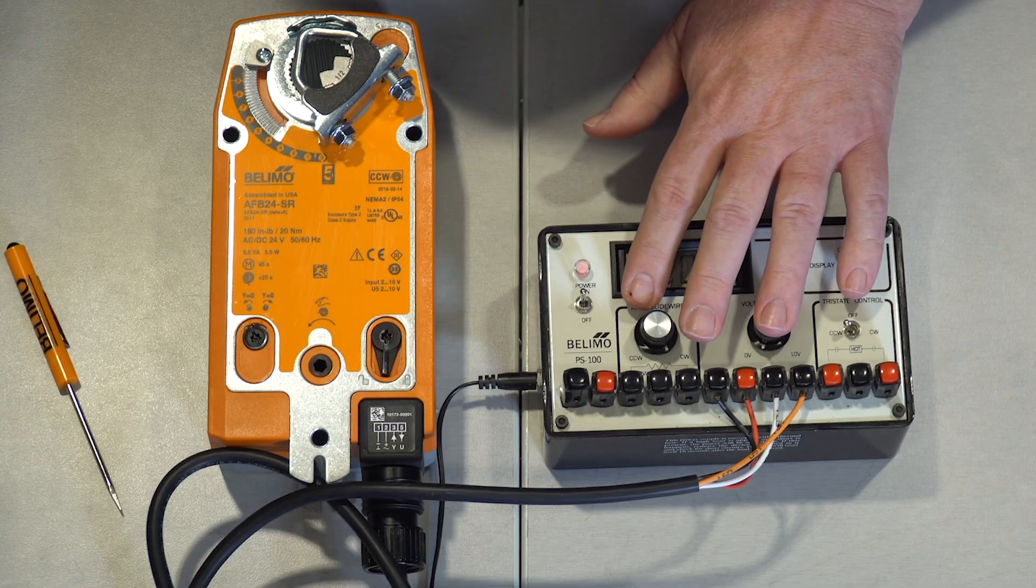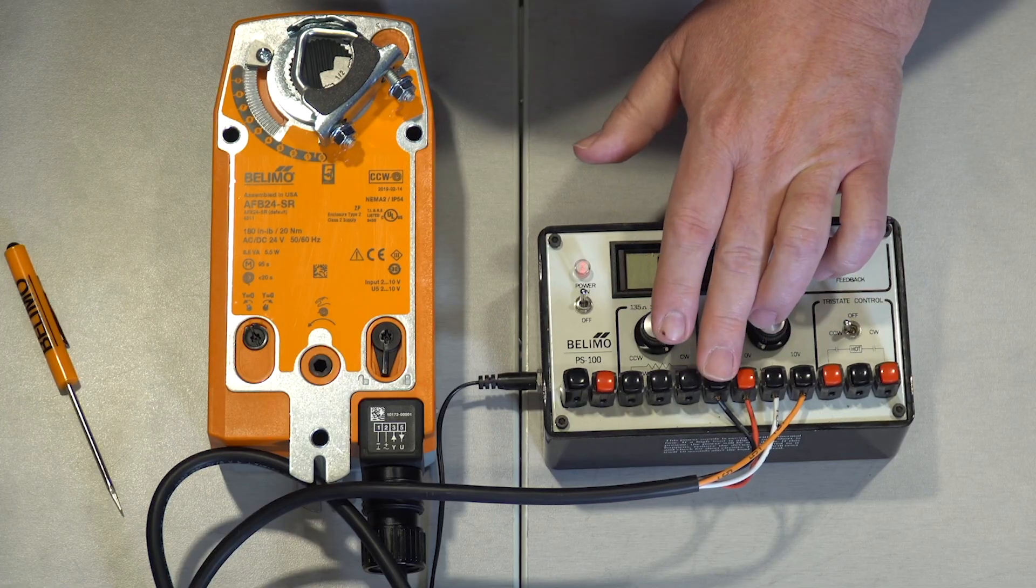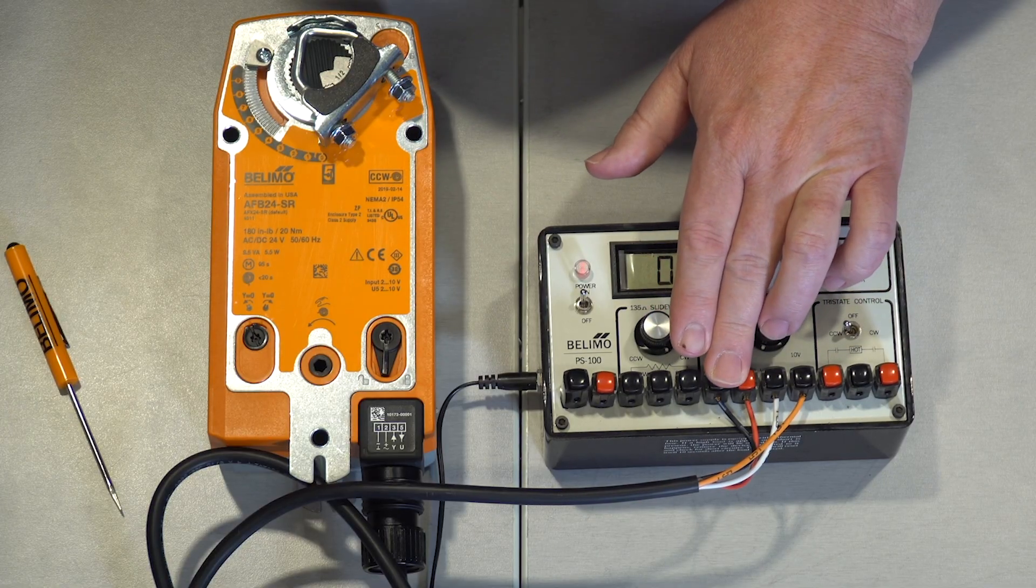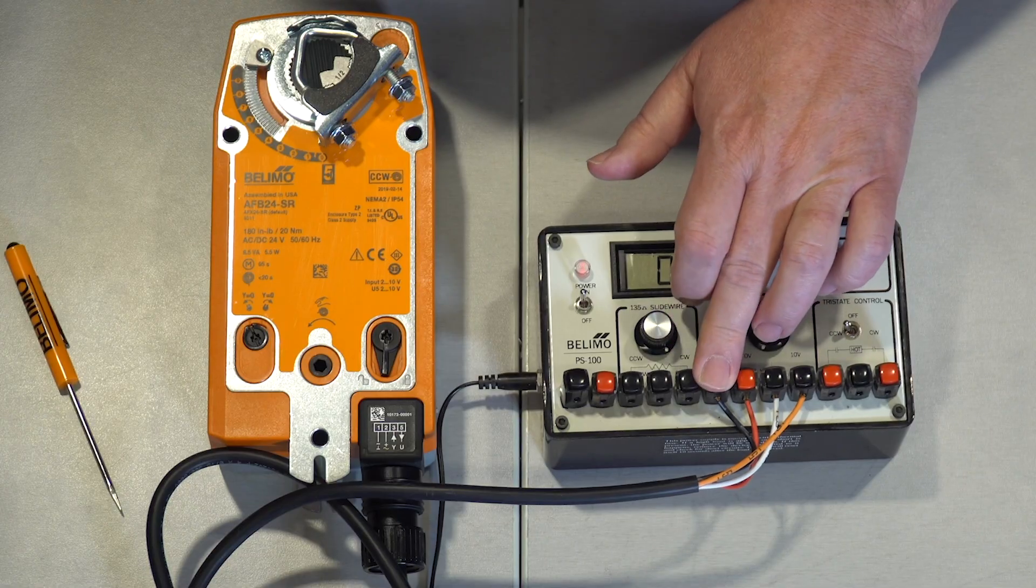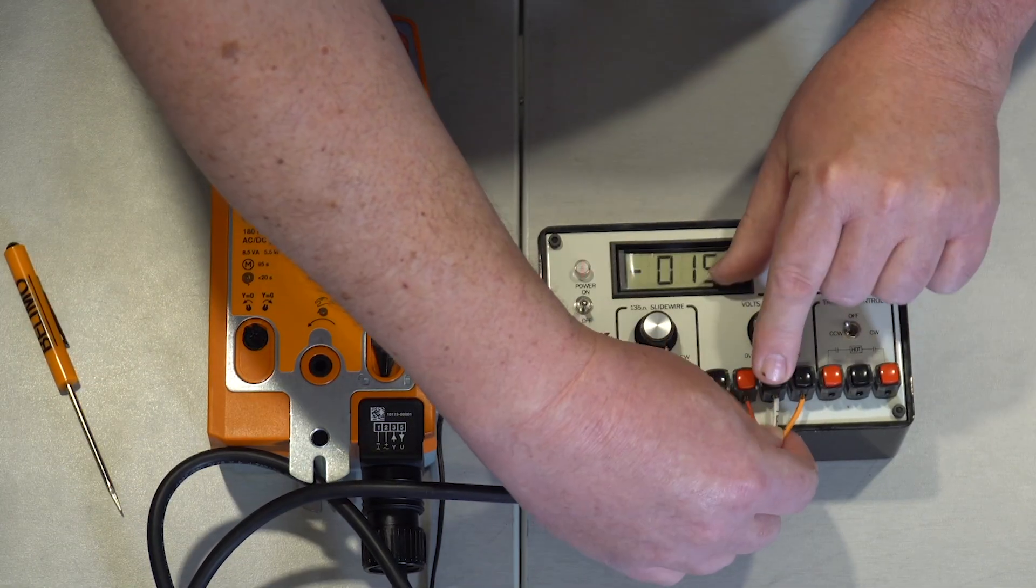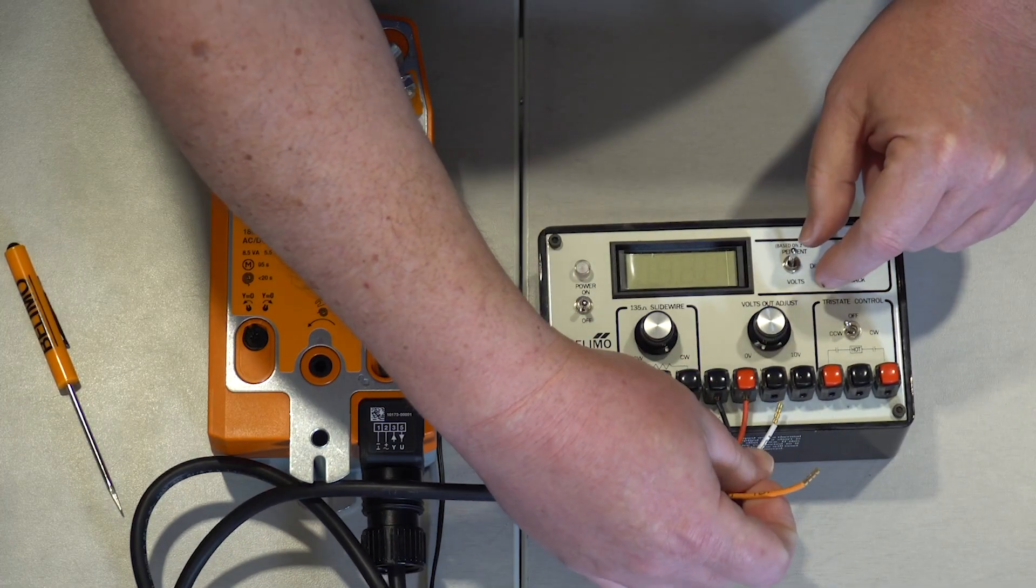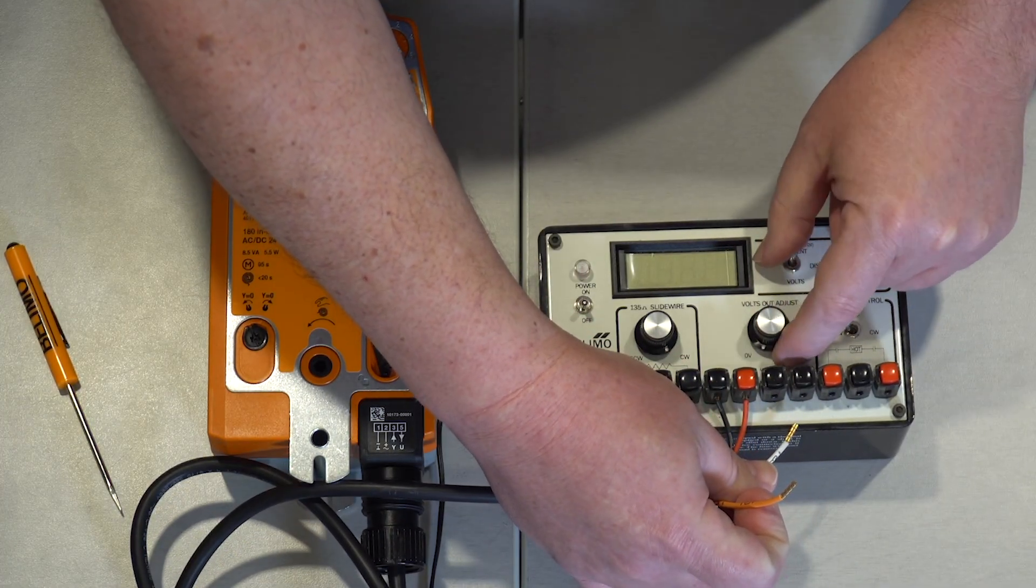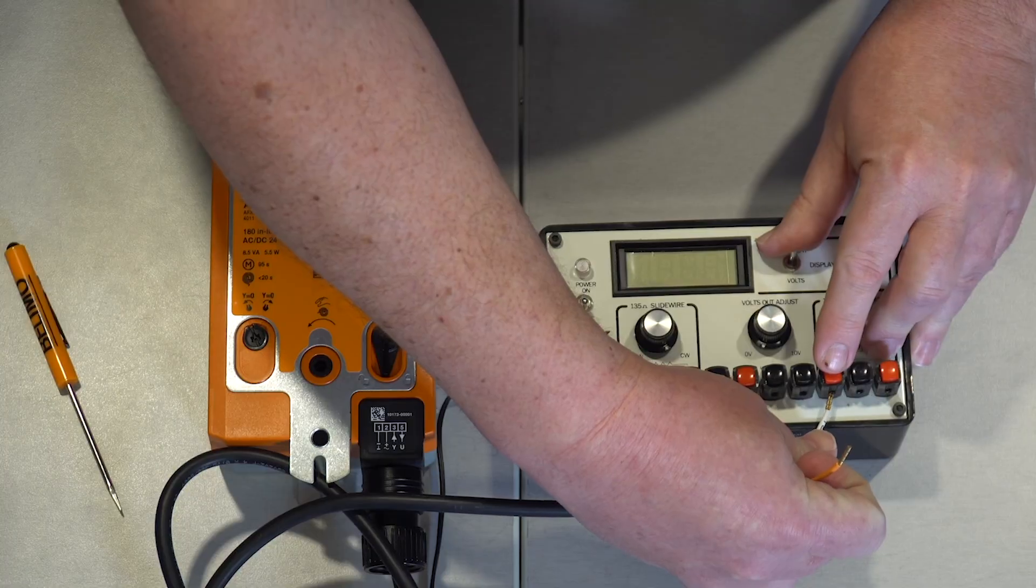Now, to wire the actuator for on-off, we're going to leave the black and red wires connected to transformer common and hot. We're going to disconnect the control output from 2 to 10, and connect it to 24 volts hot.